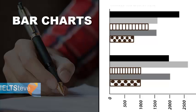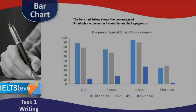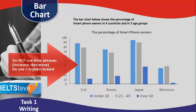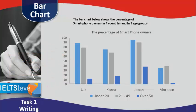This bar chart is not comparing things over time, so we want to be careful that we don't use words like 'increase' or 'decrease' — that's not appropriate here. We're comparing different countries, so it's not increasing or decreasing; it's just bigger or smaller, or a higher or lower percentage. There is no increase or decrease in this kind of bar chart.